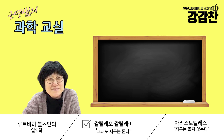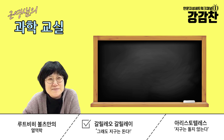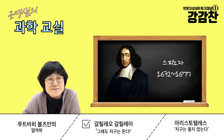이 출발이 누구냐면 갈릴레오 갈릴레이예요. 이게 과학혁명이라고 불리는 것이죠. 갈릴레오 갈릴레이는 1564년에서 1642년입니다. 이 교시에 나오는 스피노자는 1632년생이에요. 이 시기가 다 연결되어 있는데, 스피노자가 망원경 렌즈 깎는 일을 했고, 갈릴레오는 망원경으로 유명하죠.